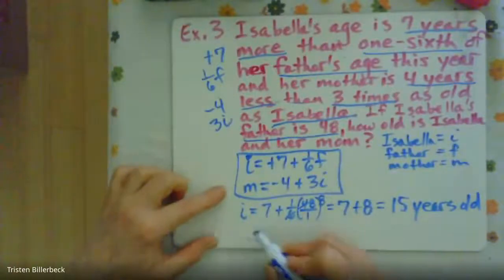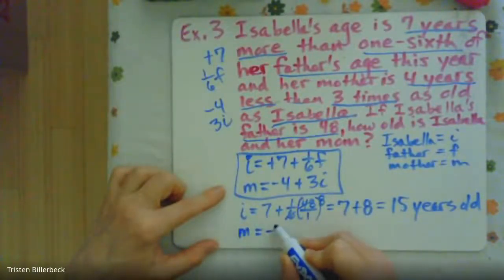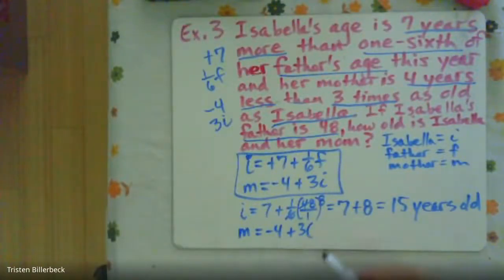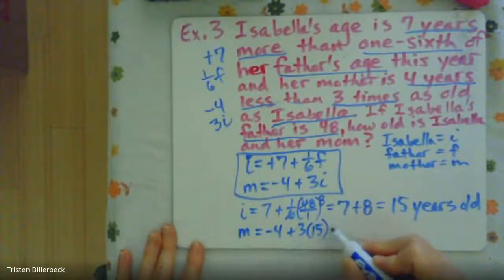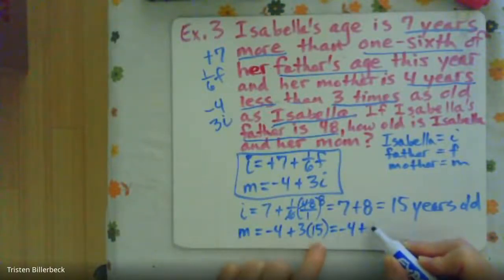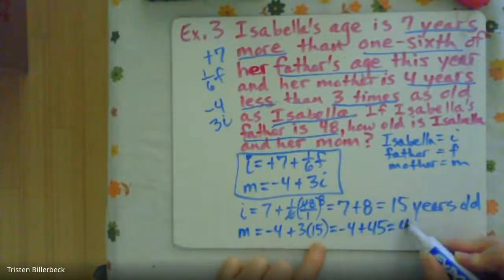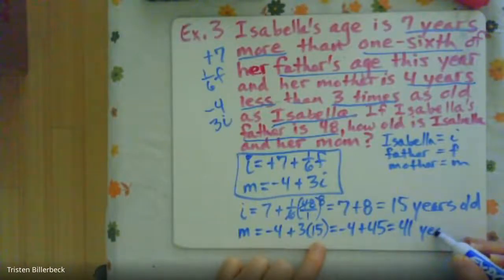So now we can solve for the mother. So the mother is minus four years plus three times the age of Isabella. So that's minus four plus, and three times 15 is 45. So the mother is 41 years old.